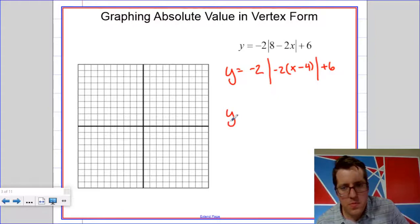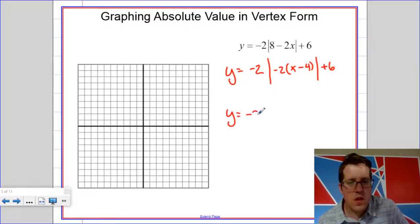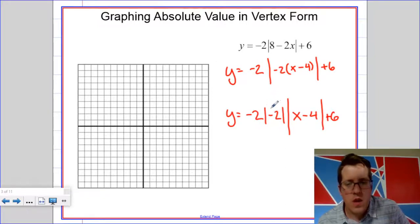Then I'm going to factor that out as an absolute value. You might feel like you're comfortable skipping this step at some point. Then I'm going to take the absolute value of that number. So the absolute value of negative two is positive two. And I'm going to multiply.